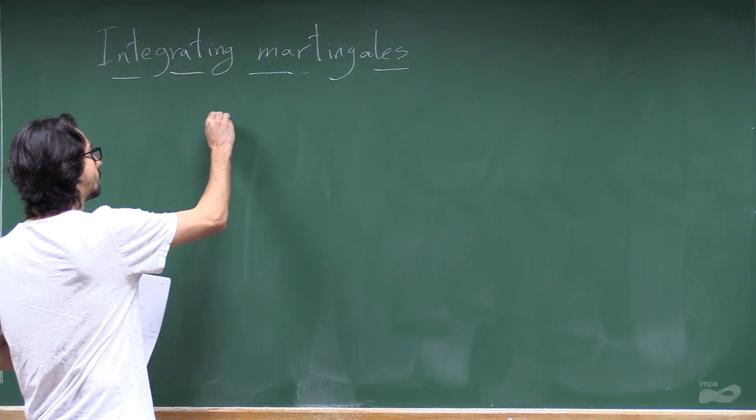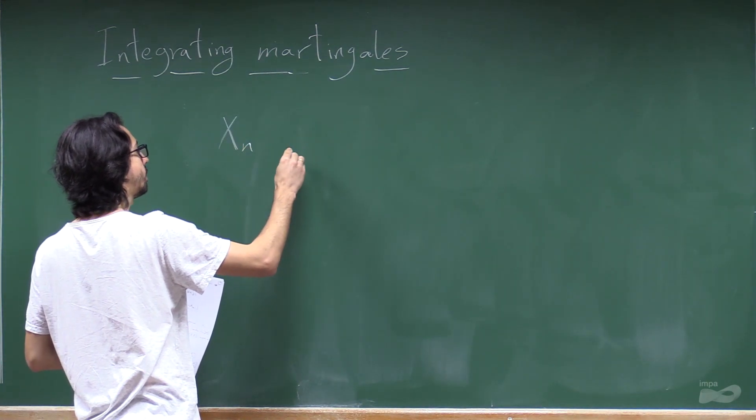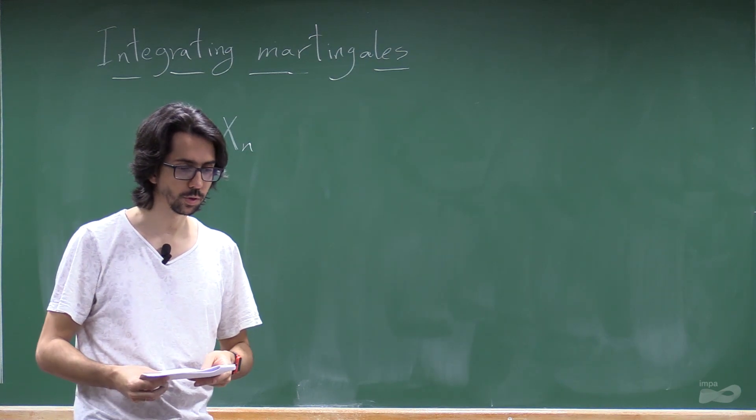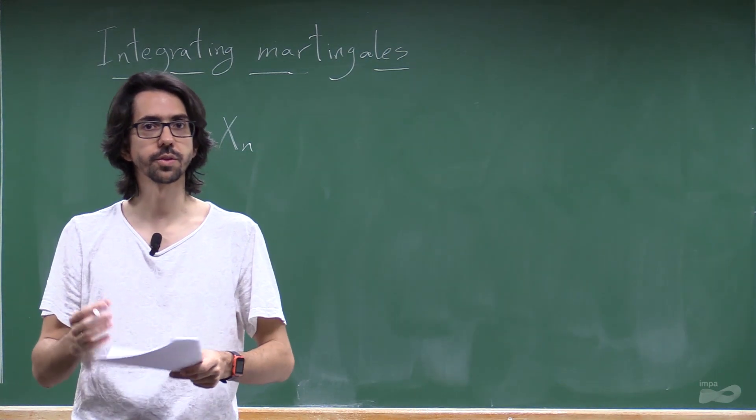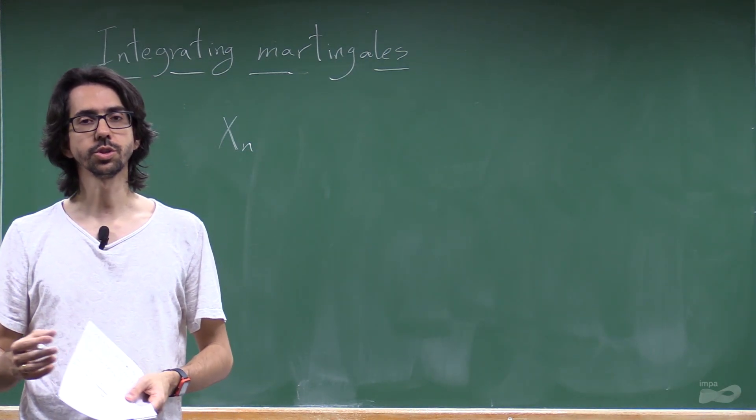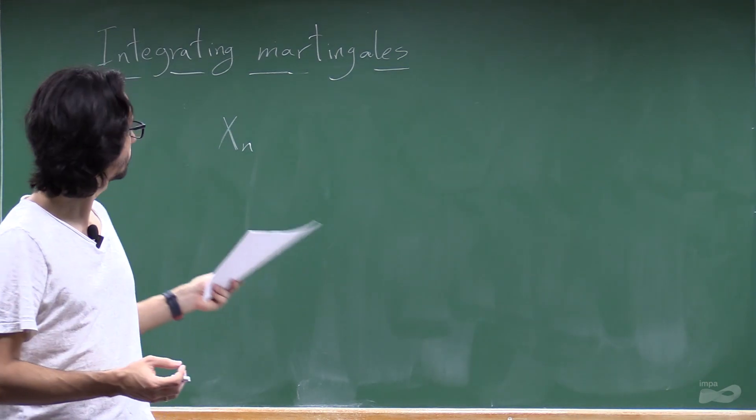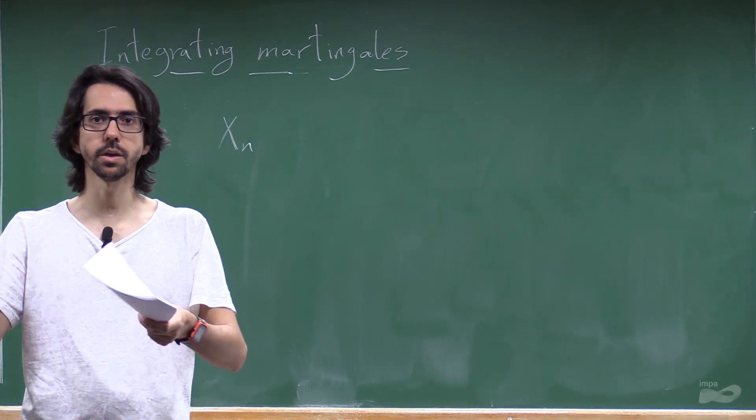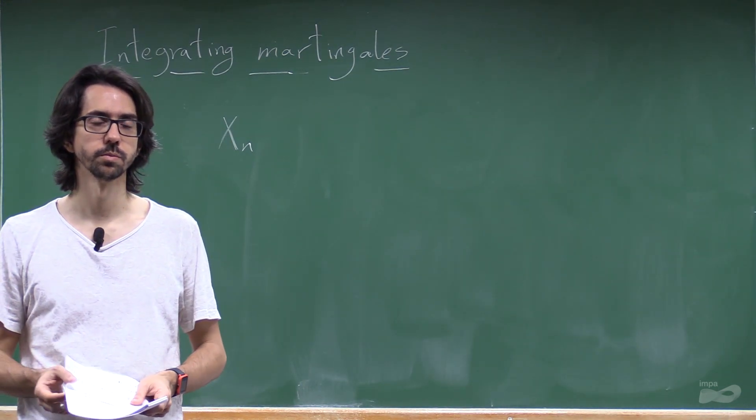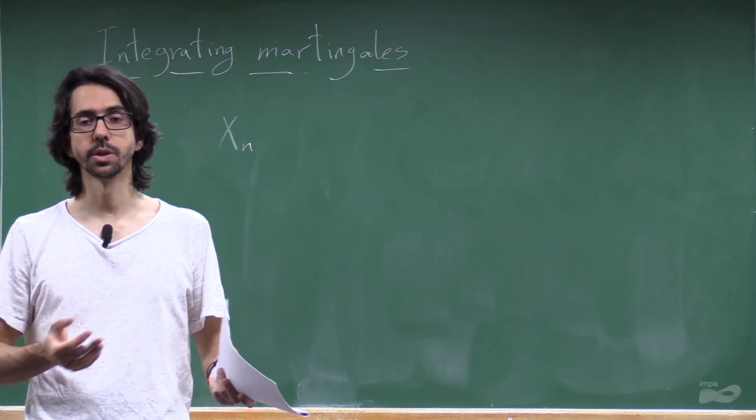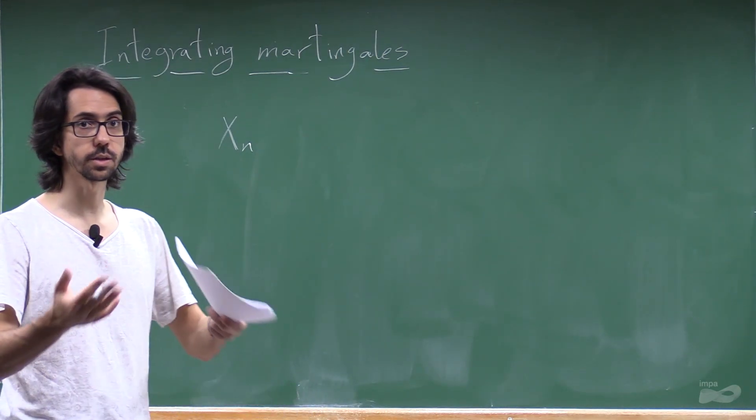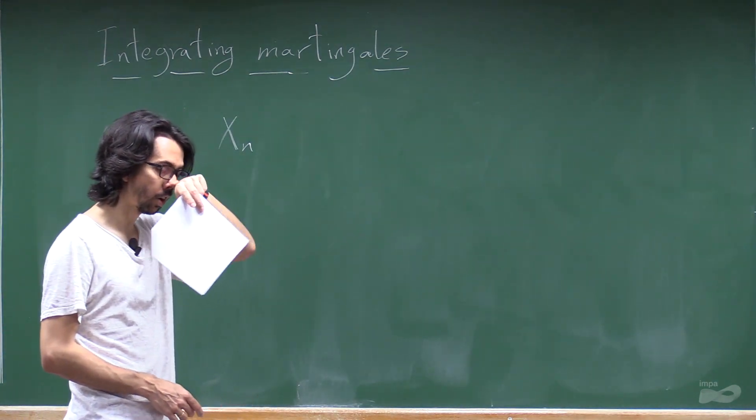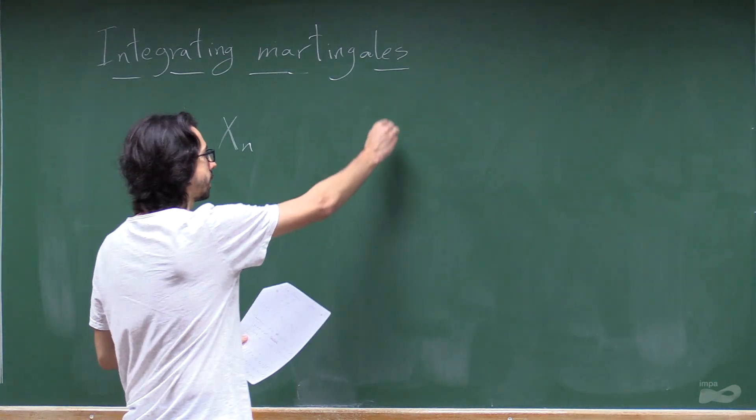So, I told that Xn being a martingale means that this is a fair game. But when I tell you something is a game, the intuition is that someone is playing, right? So what are you doing here? You're not playing, right? You're just looking at your money as time evolves.